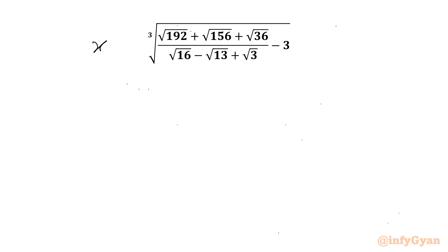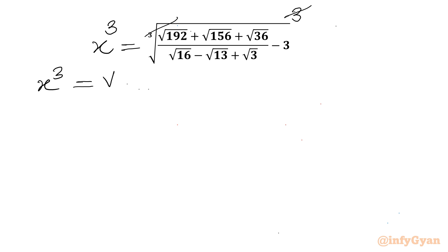I will consider the expression equal to x first. Now we will consider cubing both sides. So the cube root and cube will cancel. We can write x³ equal to the square root of 192. I can factor that as square root of 48 times square root of 4.